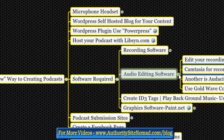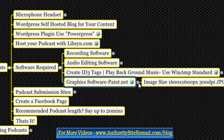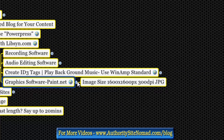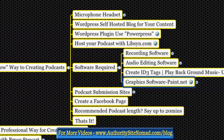We also need to create ID3 tags and play background music using Winamp. For graphics, you can use Paint to create an image that is 1600x600 pixels at 300 DPI as a JPEG. All of this is in the mind map, and if you're a member of Authority Site Nomad you get access to it.